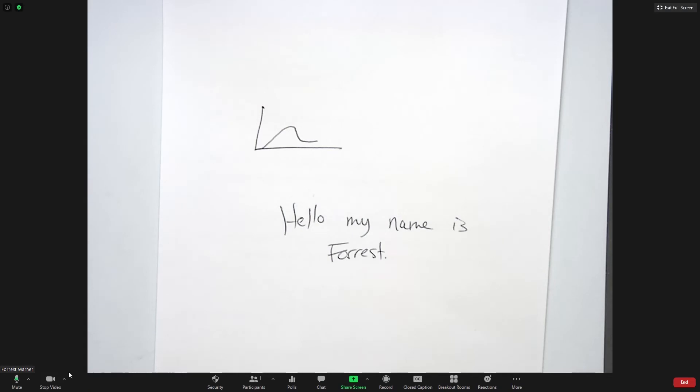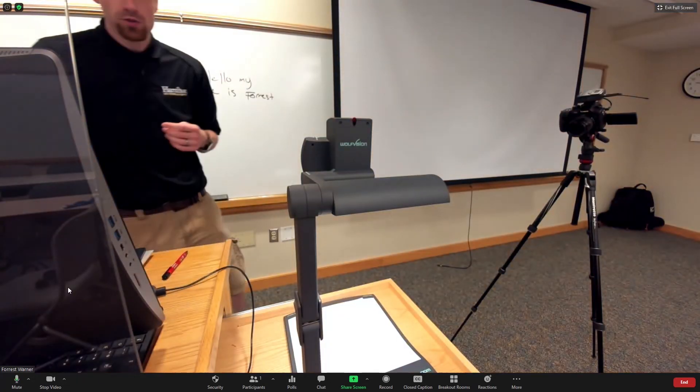Once you're done with the document camera, if you want to go right back to the Meetup camera, you can do so. Just go back into your video settings, select Logitech Meetup, and the camera will switch back.